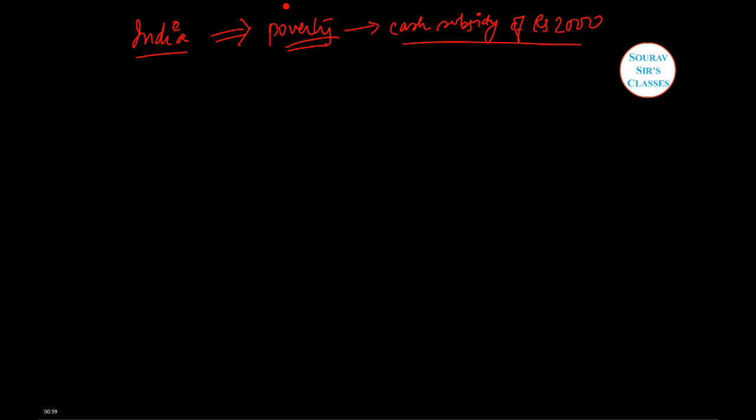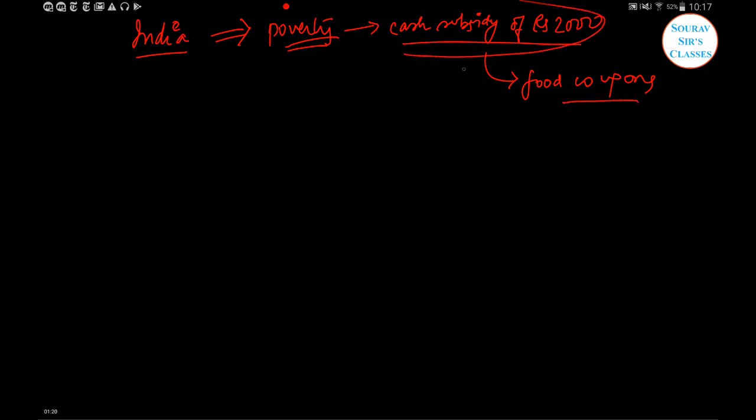This means a family receives a cash subsidy of rupees 2000 a year to get these food coupons. Using this cash subsidy, you can get these food coupons. We're framing the question such that you are receiving a cash subsidy of rupees 2000 and you can use it to buy the food coupons. This is generally done in India as a poverty elevation scheme.